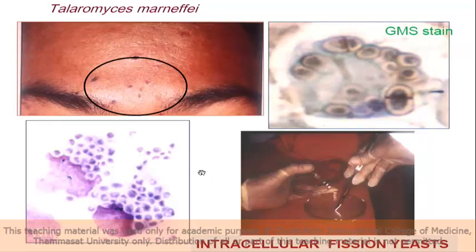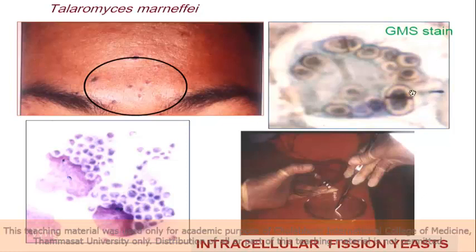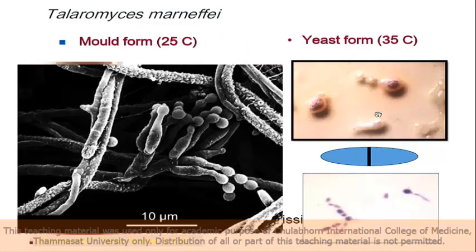For histoplasmosis I already told you: intracellular budding yeast. But talaromycosis will be fission yeast — not budding. The mold form looks just like a finger. At 25°C it is mold form; at 35°C it will be fission yeast.